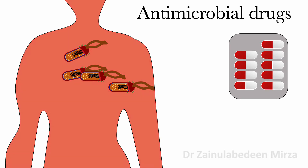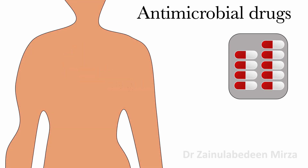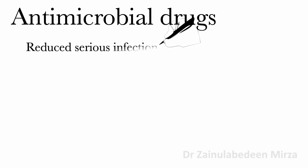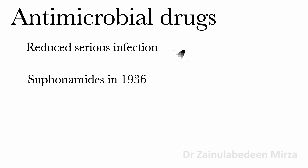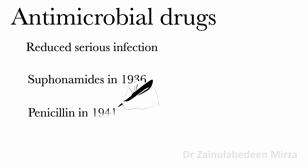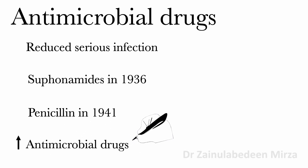The introduction of the drug to treat bacterial infection in a human is one of the most important uses of antimicrobial drugs. The use of drugs reduced the prevalence of serious infection, for example the introduction of sulfonamide in 1936 and penicillin in 1941. Since that time there has been a big increase in the number of antimicrobial drugs.